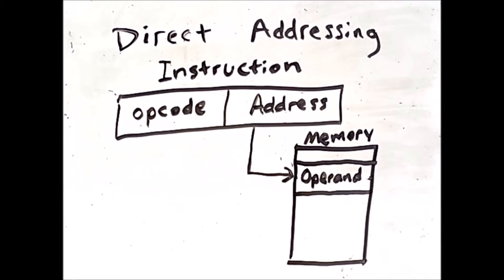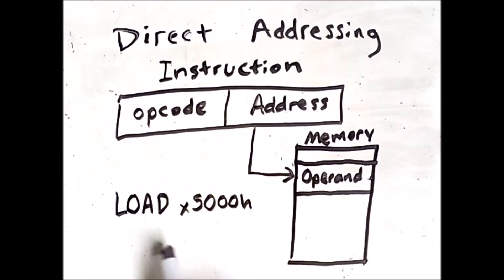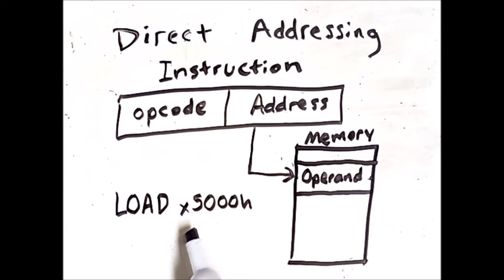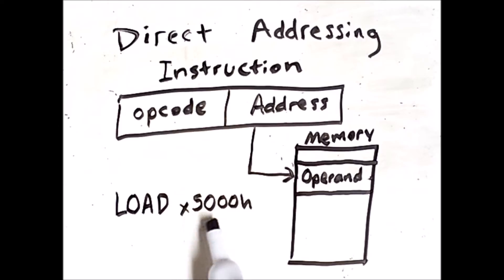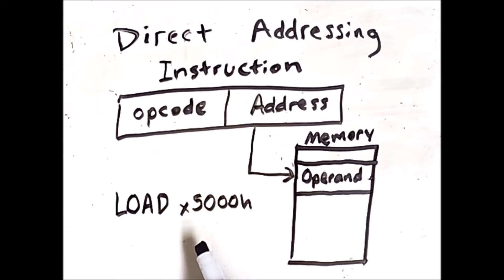Strictly speaking, x86 assembly language does not allow direct addressing, but we can imagine simple assembly language instructions that have the form of an instruction followed by a memory address. For example, a made-up load instruction would load whatever contents are in the memory address 5000 hex into some implicitly designated register, such as an accumulator. We've seen examples of instructions like this in many of the pseudo assembly languages from previous videos.